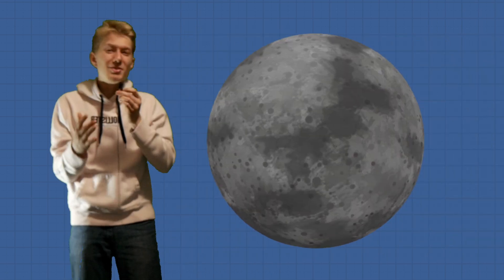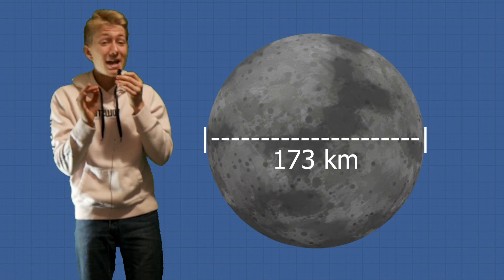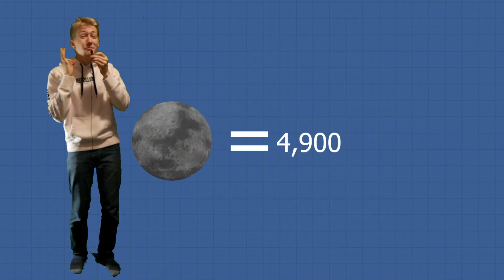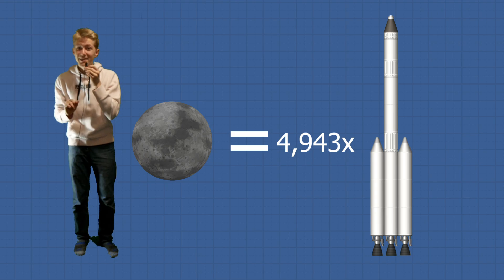Now let's look at the moon. The moon is 173 kilometers in diameter, which is equivalent to the height of 4,943 three-stage rockets.